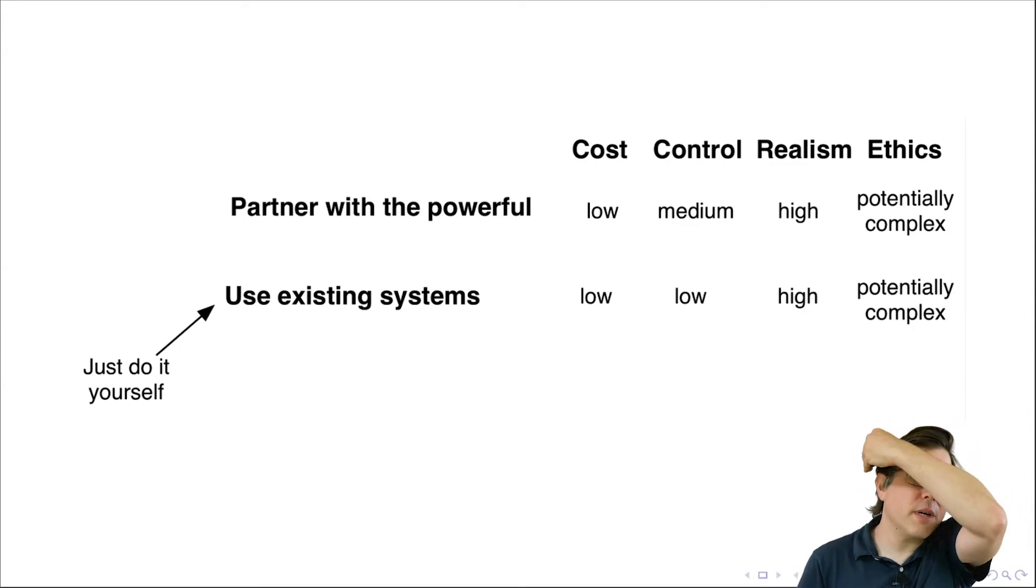So that's an example of using existing systems. The cost is generally low because you don't have to construct the system and you don't have to spend time building relationships with partners. The control is generally low because you don't control the system. The realism is high because you're working in real systems. And the ethics are potentially complex because you're potentially intervening in a real system.